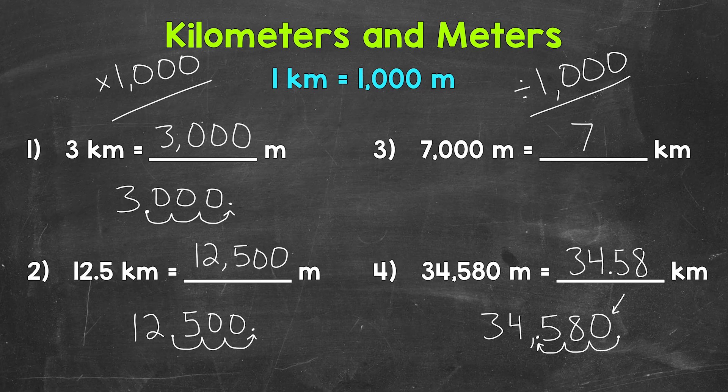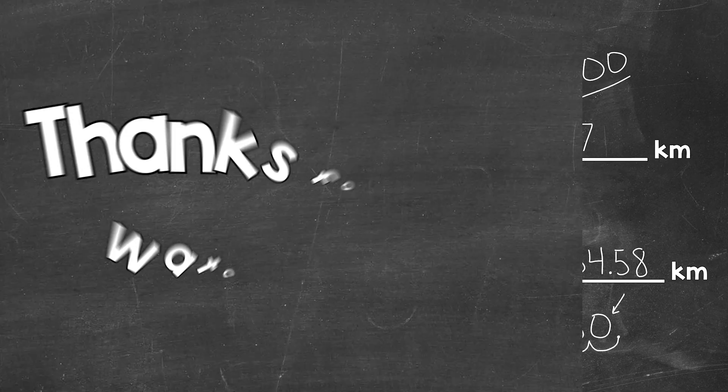So there you have it — that's how you convert between kilometers and meters. If we're going from kilometers to meters, we multiply by 1,000, and we can do that by moving the decimal three times to the right. If we're going from meters to kilometers, we divide by 1,000, and we can do that by moving the decimal three times to the left. I hope that helped. Thanks so much for watching. Until next time, peace.